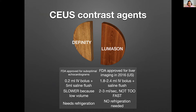The two contrast agents are Definity and Lumason. Definity has been FDA approved for suboptimal echocardiograms in the United States, and Lumason has been approved for liver imaging since 2016 in the United States. For Definity, you use a very small dose of about 0.2 ml, then flush with a 5 ml saline flush. For Lumason, a slightly larger dose of 1.8 to 2.4 ml IV bolus, then flush with a 5 or 10 ml saline flush. Use a slow injection rate for Definity because it's low volume; for Lumason, about 2 to 3 ml per second. Not too fast — you don't want to rupture those microbubbles.